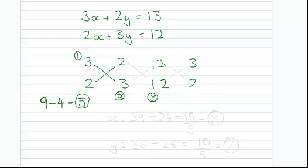Now this time we start at the X, because we're going to calculate X. We have three times thirteen, which gives us thirty-nine. Take away two times twelve is twenty-four, which gives us fifteen. We divide by our magic number, in this case five.